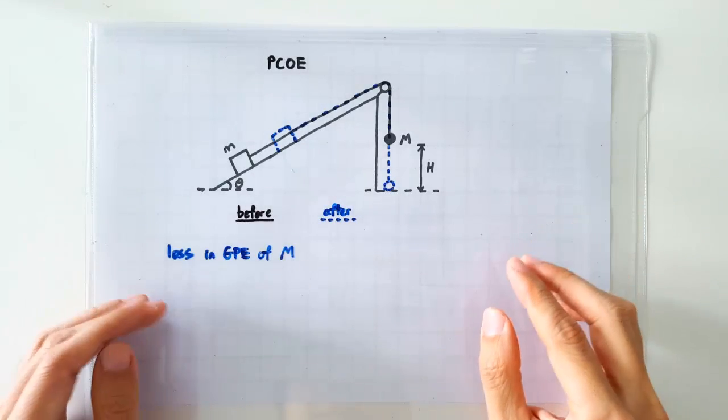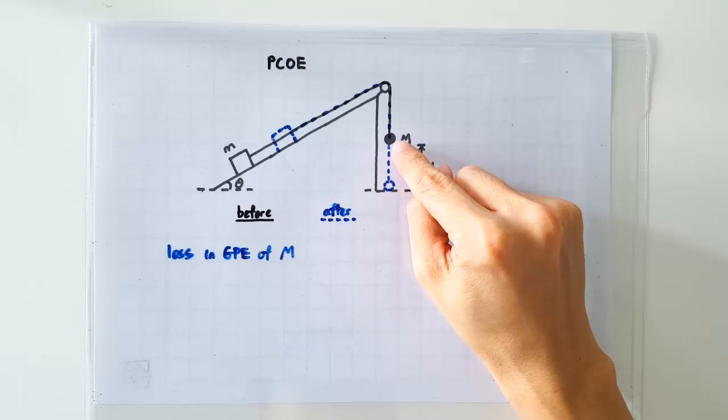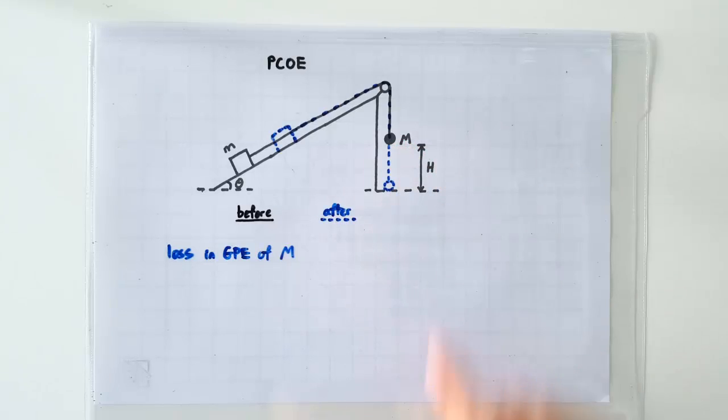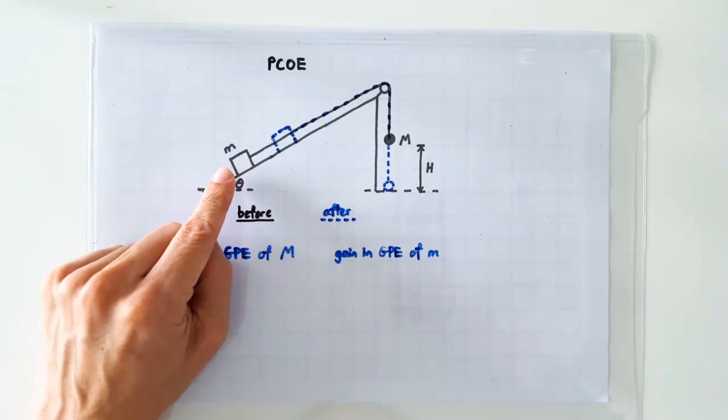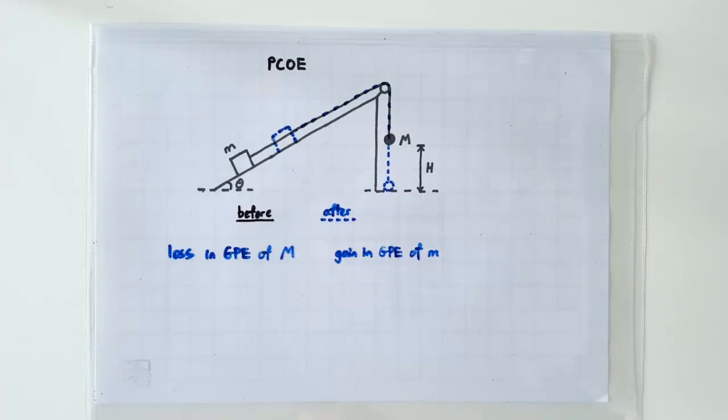Next, we have to identify the gains and losses in energies. Obviously the lead ball has fallen down in height, so there's a loss in GPE of big M. The wooden block on the other hand has gained height, so there's a gain in GPE of small m.